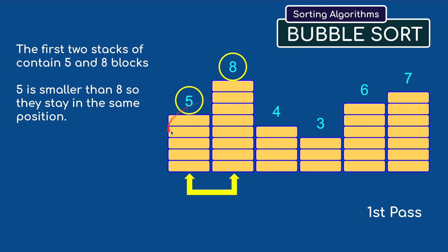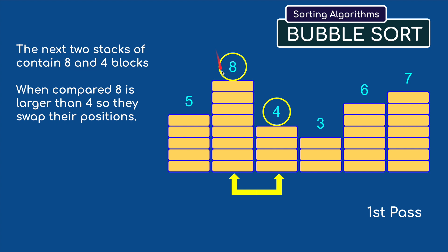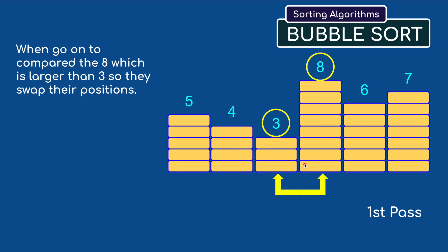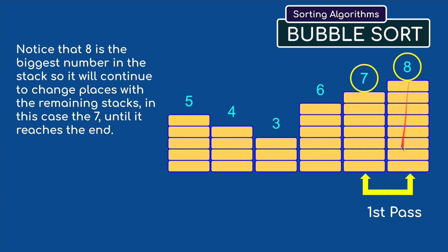The first two stacks contain five and eight blocks - five is smaller than eight so they stay in the same place. When we move on to the next two, eight and four, these need to swap positions. It's the same when we do three and eight. Eight is still the tallest so we're going to be swapping the eight with the six and then swapping the eight with the seven. The biggest number in the stack will continue to change places in this first pass until it reaches the end.